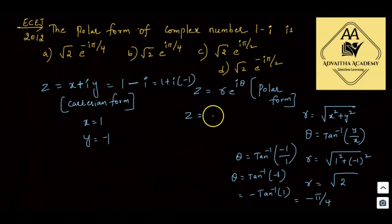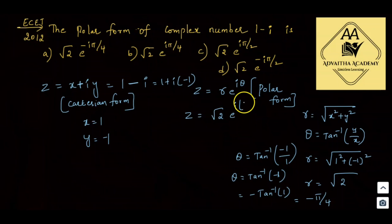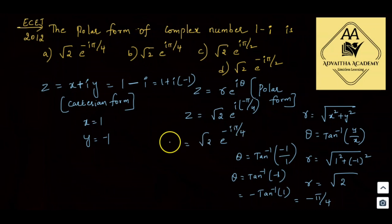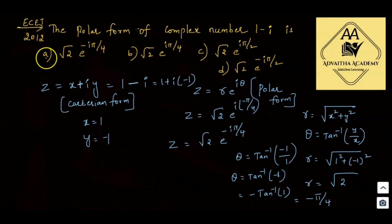So placing r equals root 2 and theta equals minus pi by 4 into z equals r times e^(iθ), we get z equals root 2 times e^(i times minus pi by 4), which is root 2 times e^(minus i pi by 4). That is the polar form. Option A is correct.